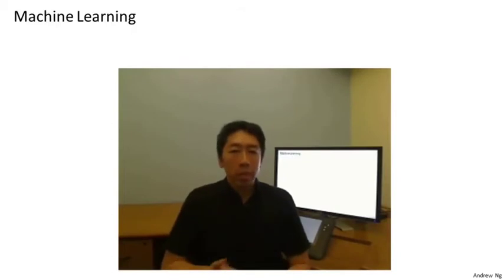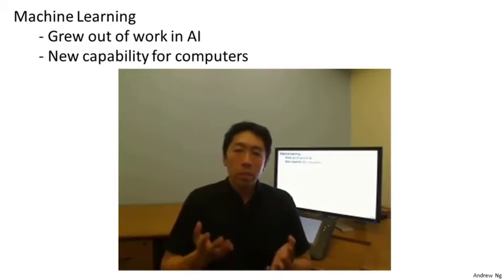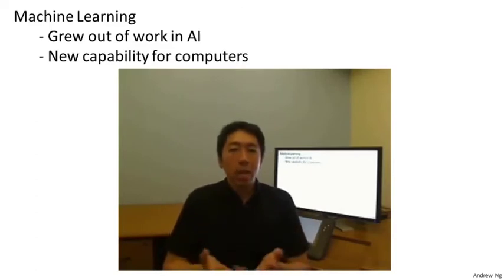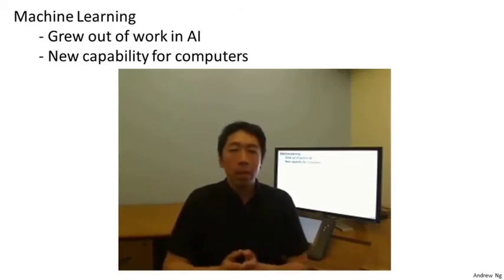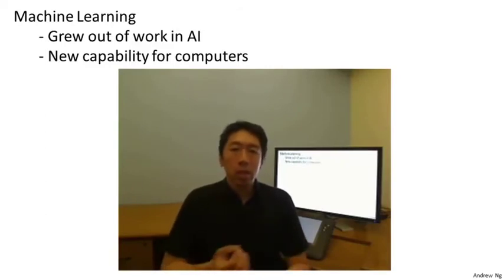So why is machine learning so prevalent today? Machine learning is a field that grew out of AI — artificial intelligence. We wanted to build intelligent machines, and it turns out there are a few basic things we could program a machine to do, such as finding the shortest path from A to B. But for the most part, we just did not know how to write AI programs to do the more interesting things, such as web search, photo tagging, or email anti-spam. There was a realization that the only way to do these things was to have a machine learn to do it by itself. So machine learning was developed as a new capability for computers, and today it touches many segments of industry and basic science.